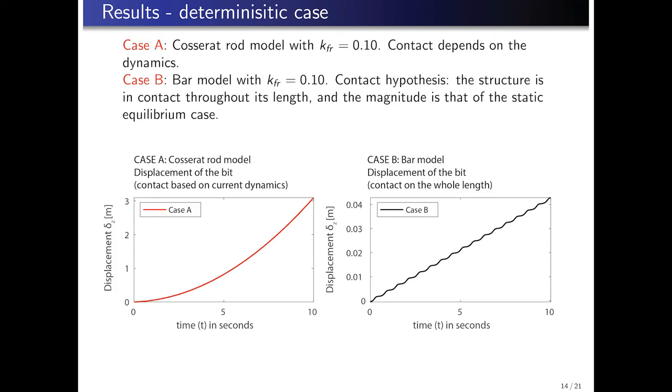Now, remembering that we are still analyzing the deterministic case, a comparison of two different cases is shown. Case A considers the friction coefficient, k_fr, equal to 0.10, and the Cosserat rod model is used. That means that deflection is being considered, and contact, that is, the normal force, depends on the dynamics. Case B considers the same value for the friction coefficient, but contact is assumed to take a uniform value. Moreover, the magnitude of the normal force coincides with the static case, that is, the self-weight of the structure.